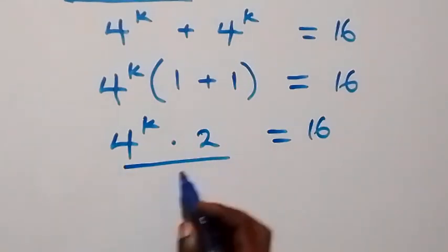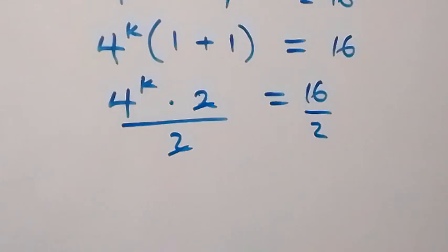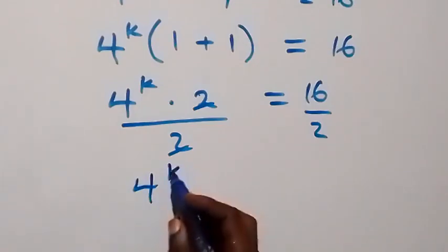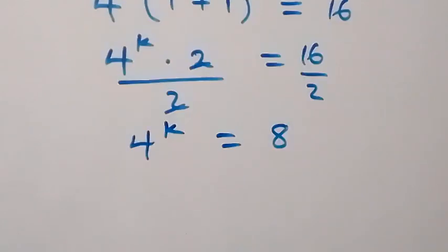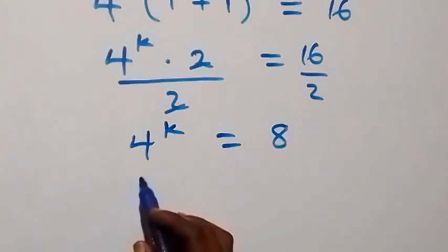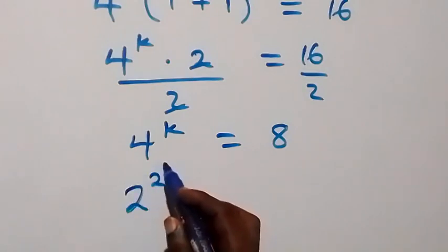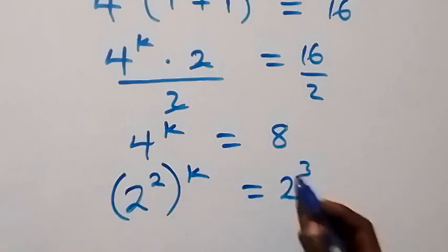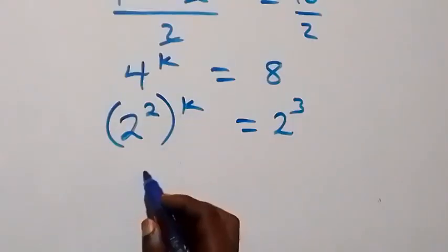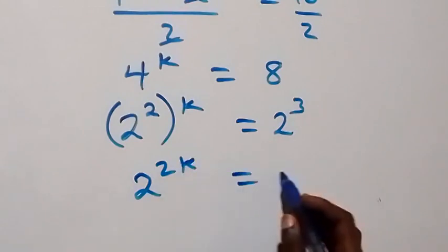Divide both sides by 2. These 2s cancel each other, which gives 4 raised to power k equals 16 divided by 2, which is 8. From here, we change both sides to base 2. We have 2 raised to power 2, which is 4, then raised to power k, equals 2 raised to power 3. The powers multiply, giving 2 raised to power 2k equals 2 raised to power 3.